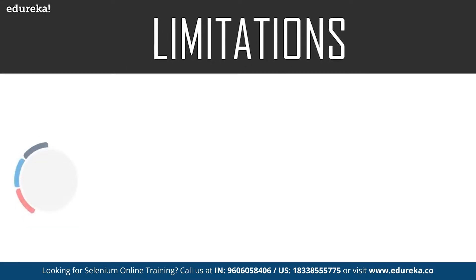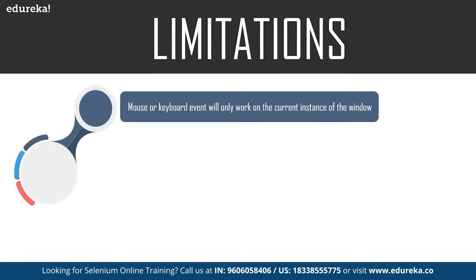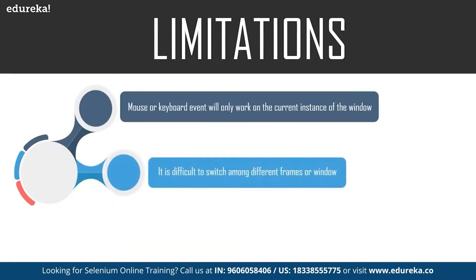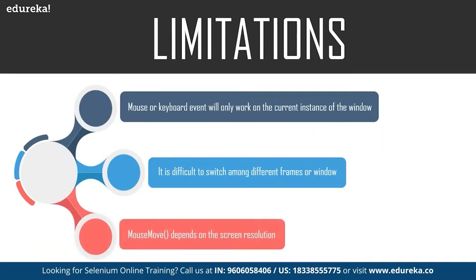Now let's look at the limitations of the Robot class. Mouse and keyboard events will work only on the current window, and it's difficult to switch among different screens or windows. If code execution moves to another window, the events will still apply to the previous window. Methods like mouseMove depend on screen resolution, so tests using XY coordinates will behave differently on different screens. If running tests in a virtual machine, the script failure rate is higher.